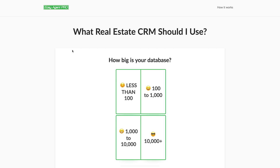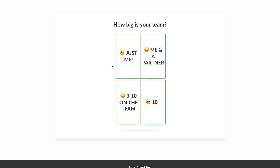Here we are at the very start of the quiz. The very first question we're going to ask you is: how big is your database? Let's assume you're a relatively new agent and you have less than 100 people logged in your database right now. Next, how big is your team? Are you flying solo, operating independently, do you have a partner, or are you part of a large-scale team? Let's say you're flying solo right now.